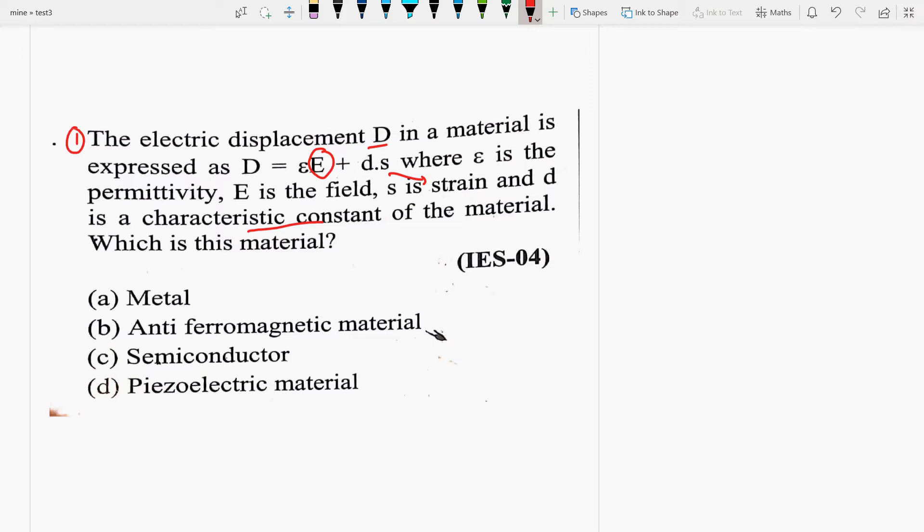Dekheye, is question me, yeh jo aapka question hai, kyunki jaha bhi strain hoota hai, where there is a strain, waha pae aapka piezoelectric material role play karta hai. Toh yaha pae, kyunki aapne padhaa bhi hai, strain kya hoota hai, strain is the change in initial length by original length. So, because the equation is, D is equal to epsilon E plus d dot S, where S is what? It is a strain. And d is the characteristic constant of the material. Toh is material ko hum piezoelectric material boling hai. The option is D.